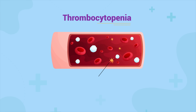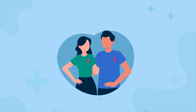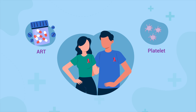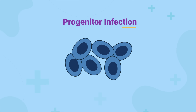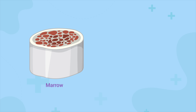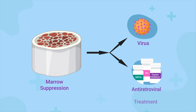Thrombocytopenia, or low platelet counts, might occur because of shortened platelet survival in HIV-infected patients not on ART, as well as direct infection of progenitor cells. In the same vein, neutropenia occurs because of marrow suppression from the virus or from antiretroviral treatment.